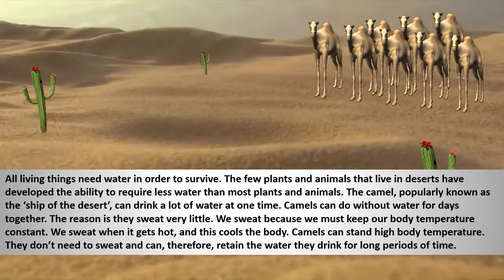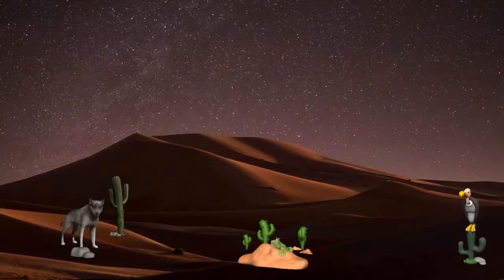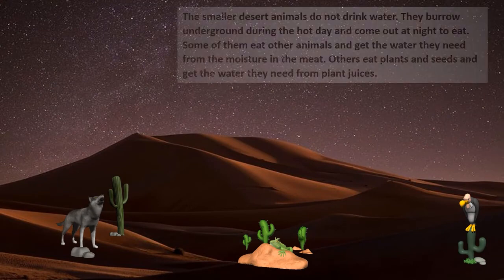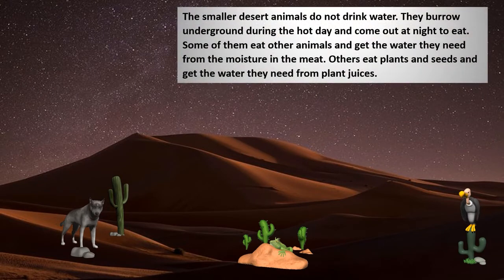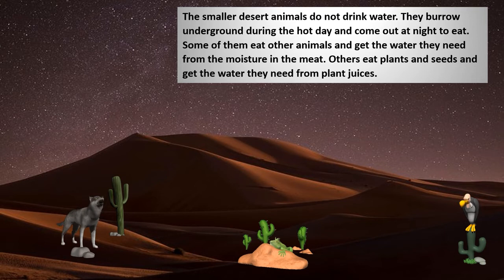In the case of other animals, small animals do not drink water. They burrow underground during daytime and come out during night. Some of the animals who feed on other animals get water from moisture in meat, while plant-eating animals get it from plant juice.